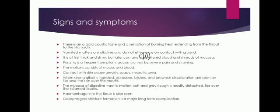The motions consist of mucus and blood. When these alkali poisonous metals come in contact with the skin, they cause a grayish, soapy, and necrotic area. When strong alkalis are ingested, they produce blisters and brownish discoloration on the lips and skin over the mouth. The mucosa of the digestive tract is soft and grayish, readily detached, lying over the inflamed tissues. Hemorrhage into the tissue is also seen. Esophageal stricture formation is a major long-term complication of alkali poisoning.